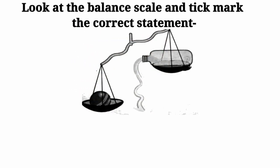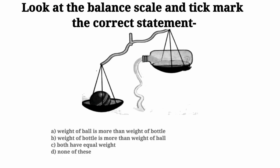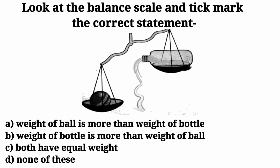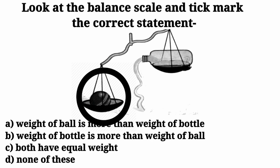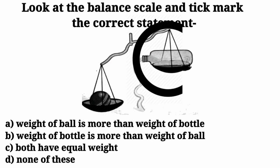Look at the balance scale and tick mark the correct statement. Here we have a picture of a balance scale with 2 pans. 4 options are given and we have to choose the right option. Option A, in this balance scale, there is a ball in one pan and a bottle on the second pan of the balance scale.